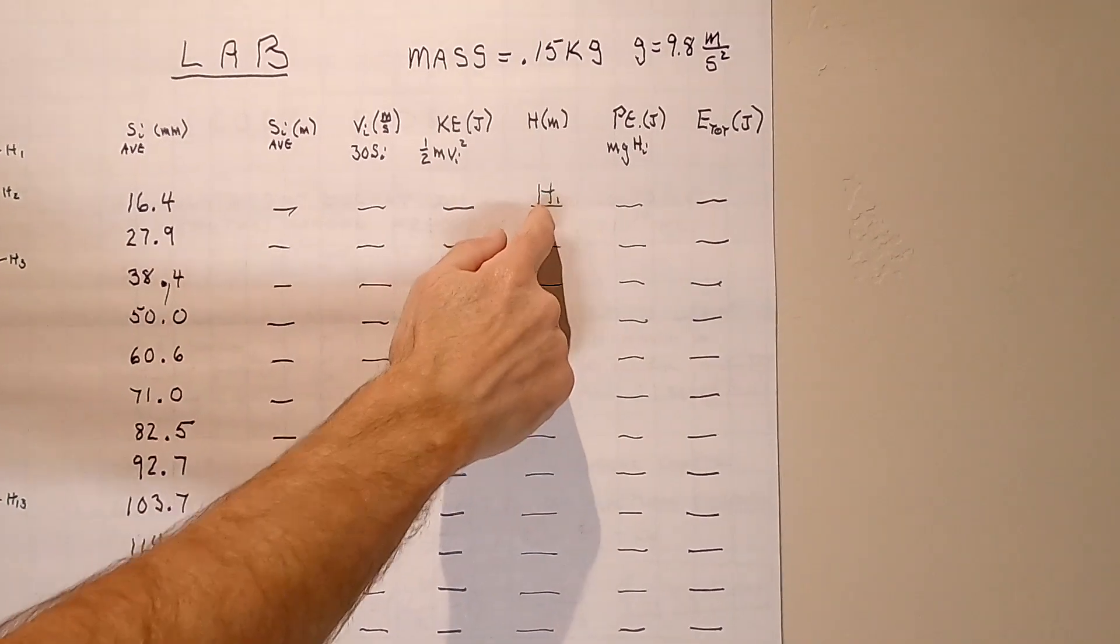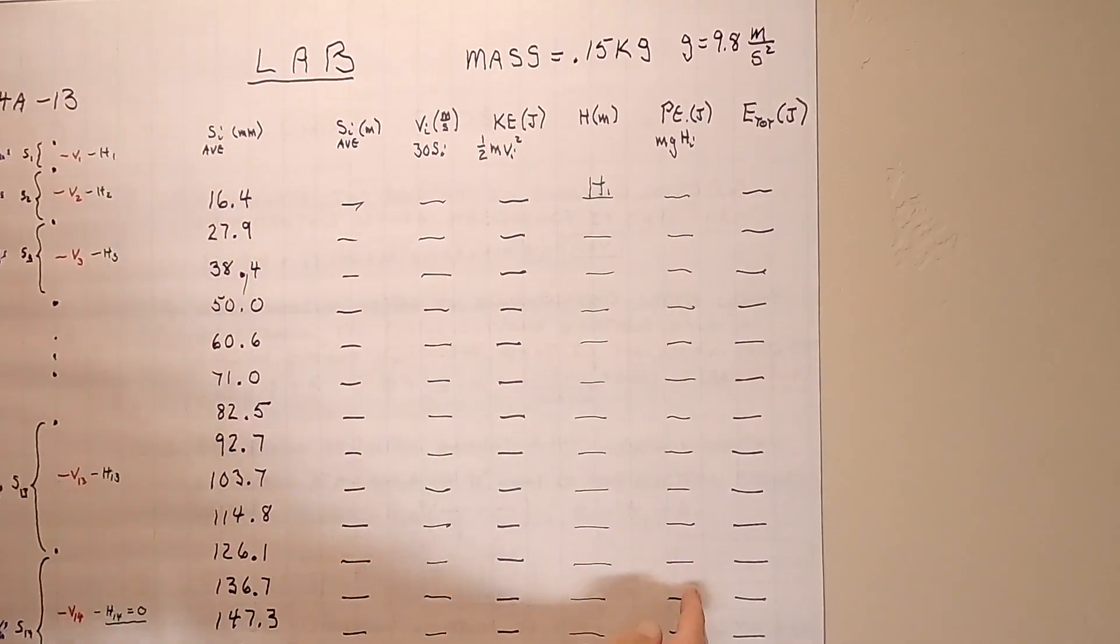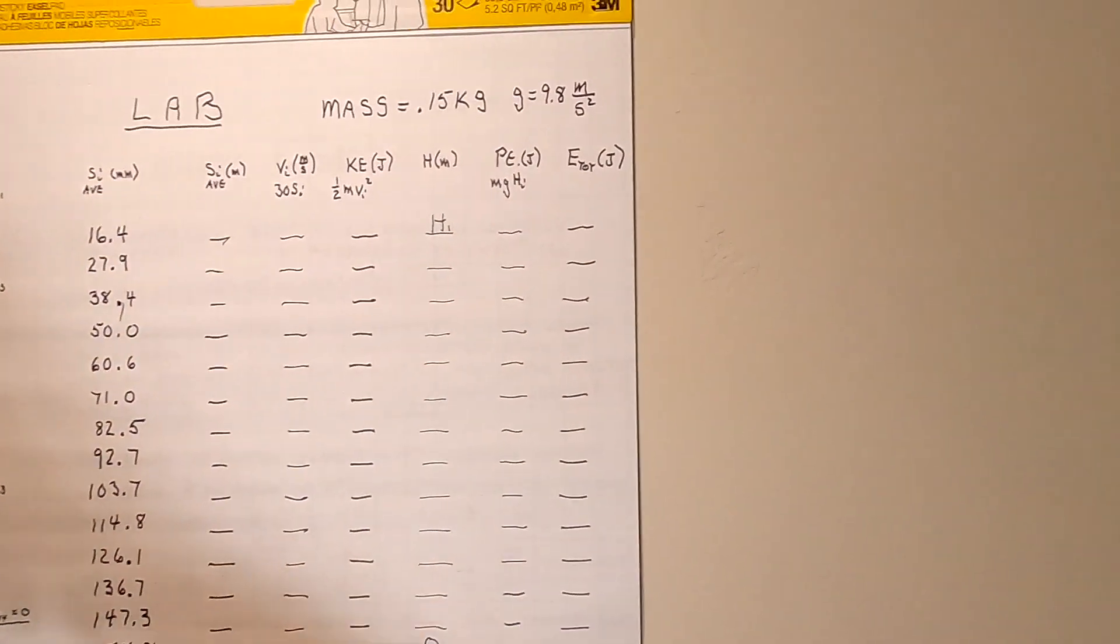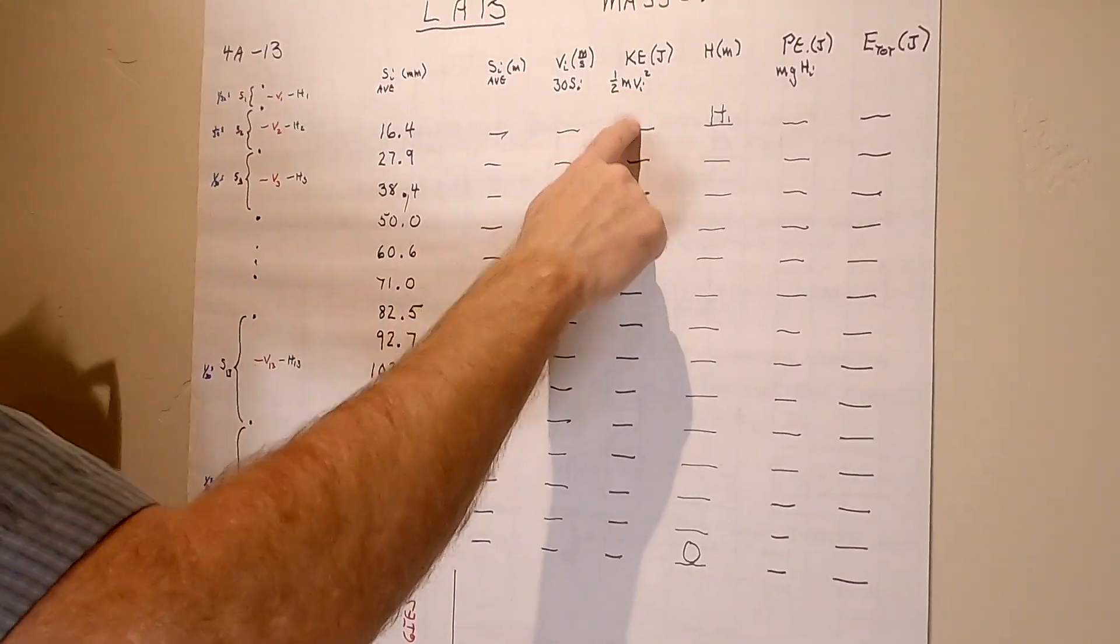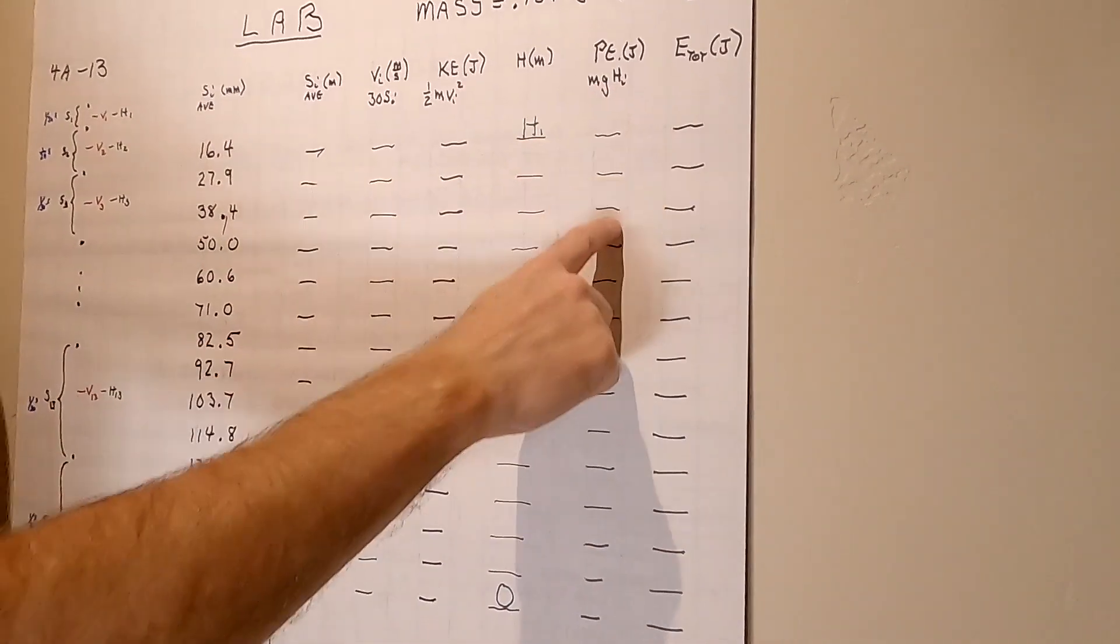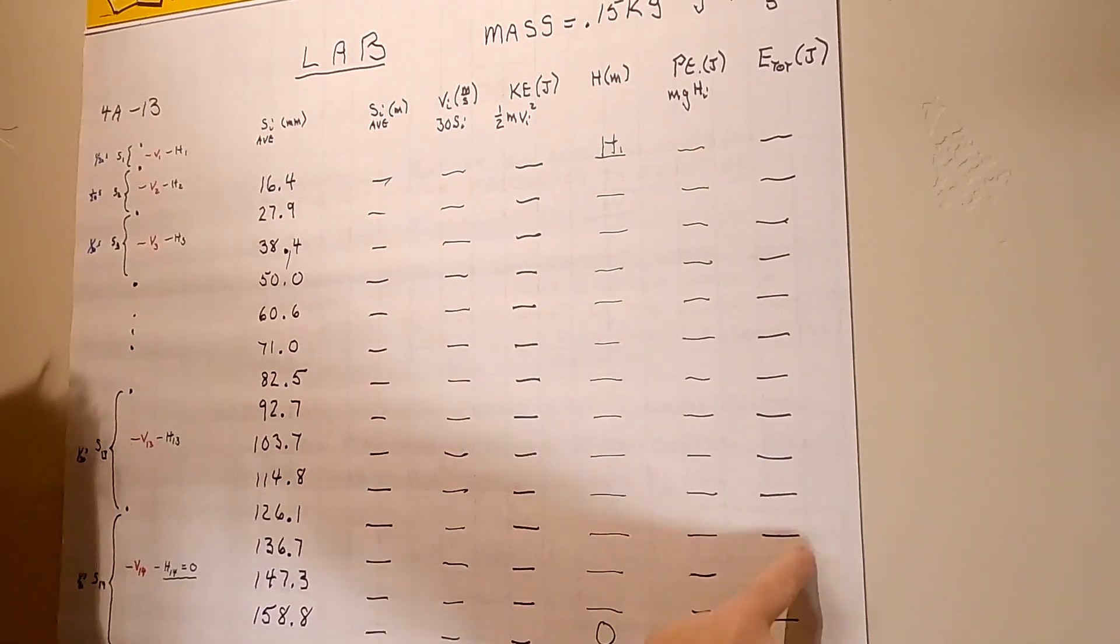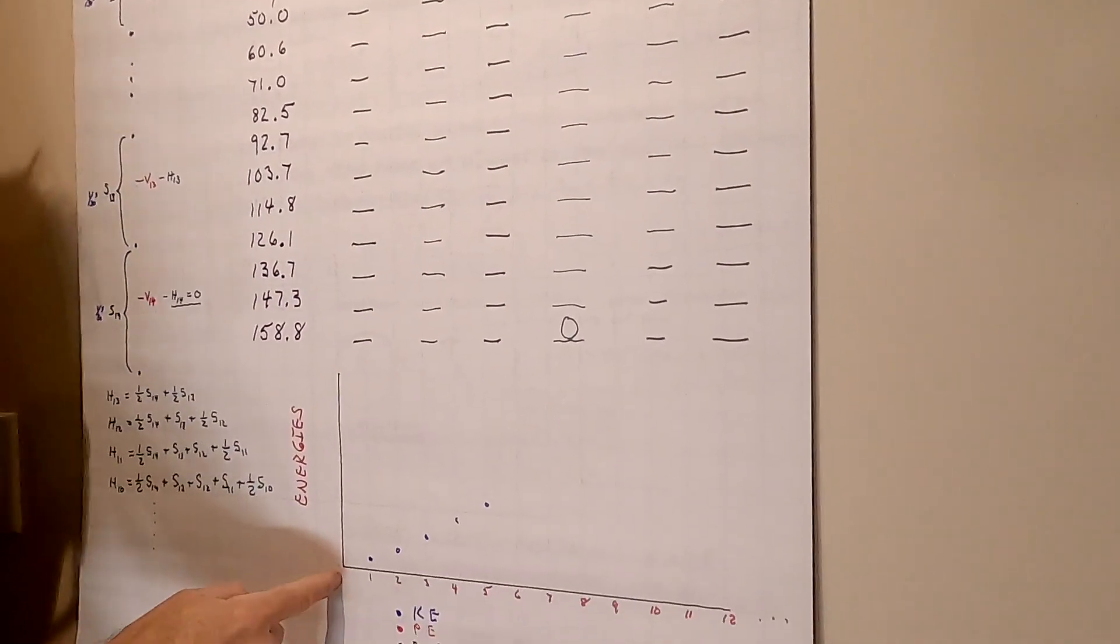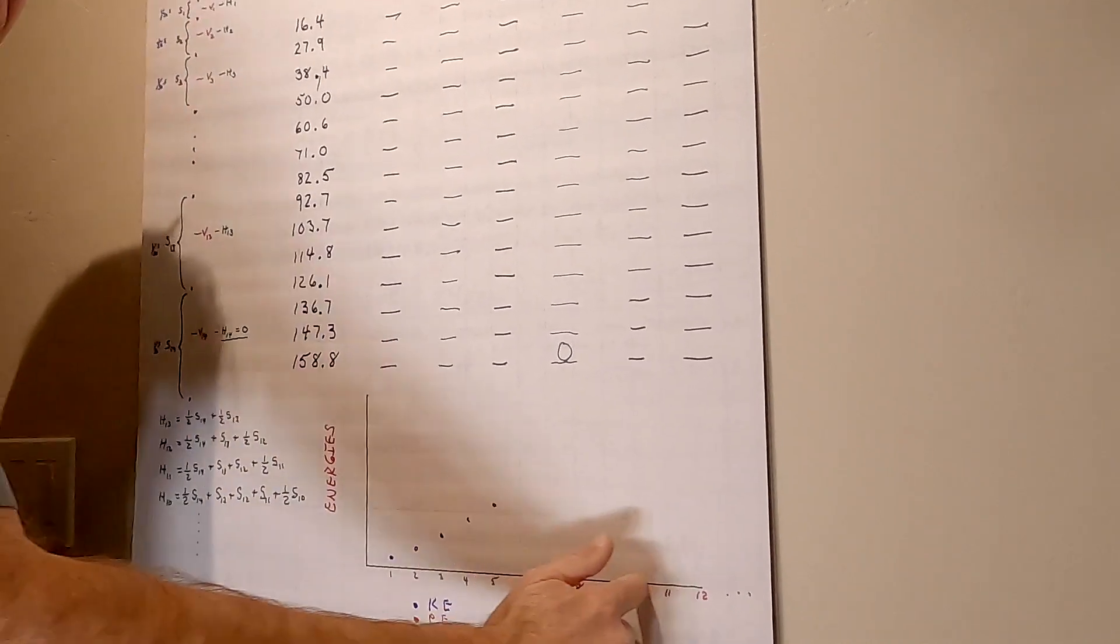We can now make a column of all the potential energies. We know the mass, we know the gravity, we can make a column of all the potential energies. And then we can sum up this column plus this column to get the total energy. And so what we want to do is we want to now make a plot, energy versus your 14 numbers, as they go along here like you did with the acceleration.